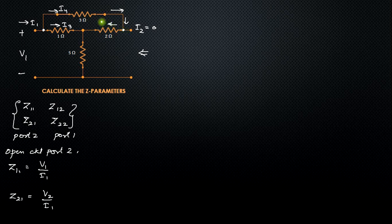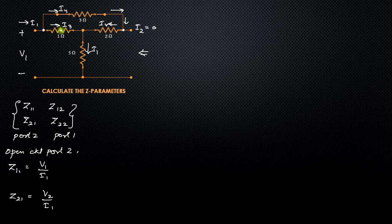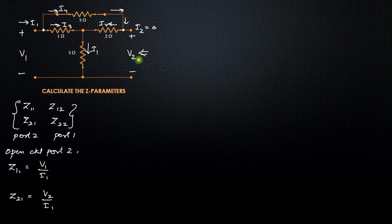I4 moves to this side. Since it is an open circuit, there is no current flowing into those terminals, so I4 passes through and I3 comes from the other branch. They meet again at the junction and make current I1 once again. The current flowing into the 5-ohm resistance will be I1. The voltage appearing across the output terminals will be V2.